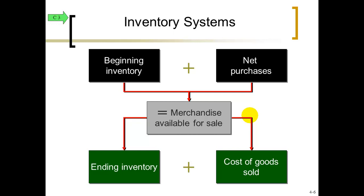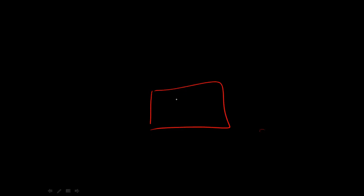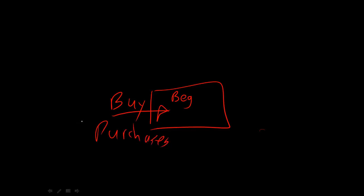We're focusing on a new account to hold this merchandise we're buying called merchandise inventory. Here at the beginning of the month or year is my beginning inventory that I didn't sell from last year or last month. And then during this period I'm going to buy more inventory to replenish the empty shelves. The term we use when we buy is called purchases. We purchase inventory from a supplier, and then we sell this merchandise to our customer.